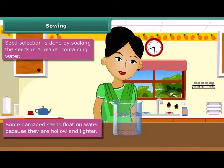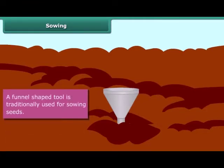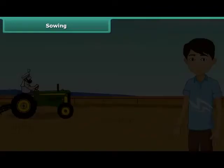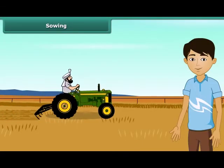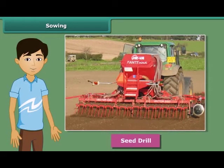Now let us see what are the tools used for sowing seeds. Look at this farmer — he has a funnel-shaped tool for sowing seeds. He is filling seeds into the funnel and passing them down through the sharp ends of the pipe to get them seeded in the soil. This is a traditional method and very easy. Nowadays, farmers use modern seed drills for sowing with the help of tractors. It sows the seeds uniformly at proper distance and depth, ensuring that seeds get covered by the soil after sowing. This process also saves a lot of time and labor.